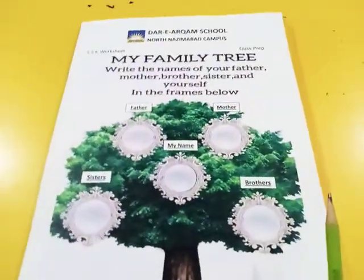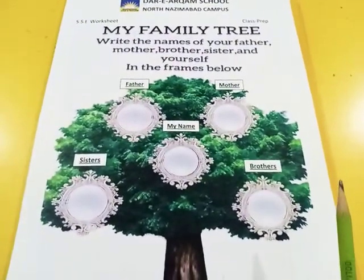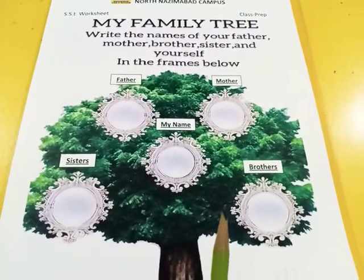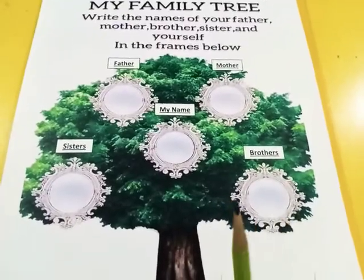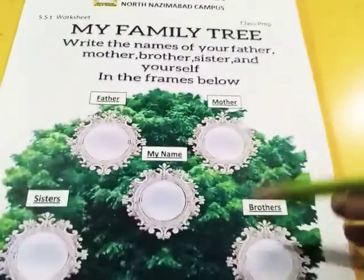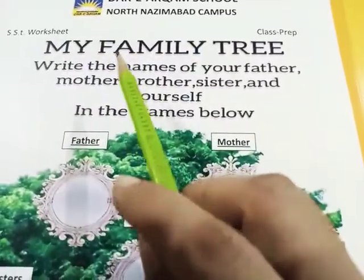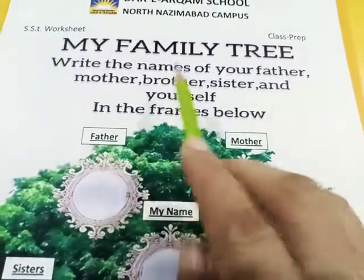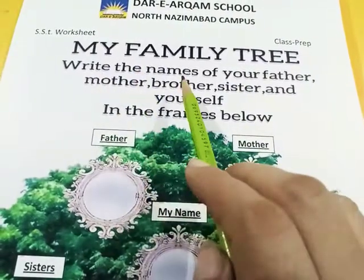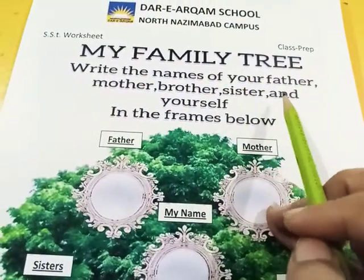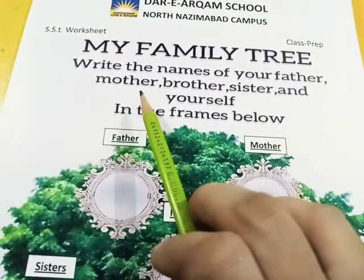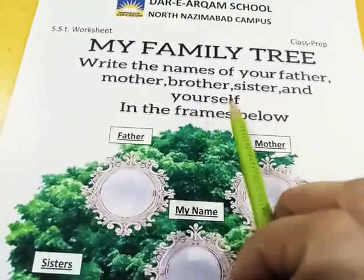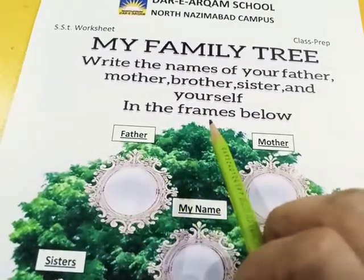We give you that worksheet — an activity. This is the family tree of yourself. What you have to do in it? My family tree: write the name of your father, mother, brother, sister, and yourself in the frames below.